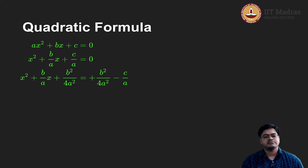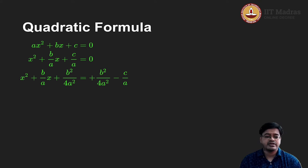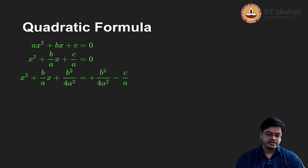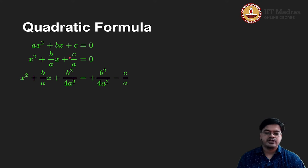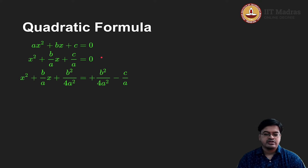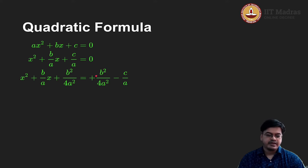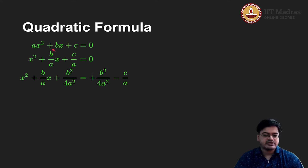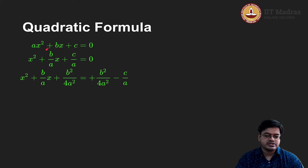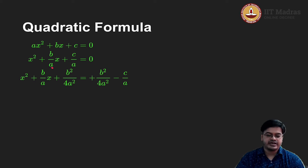Since a is not equal to 0, I can easily divide by a — that gives us the second step. Here, c by a is the constant term. As per the method of completing the square, we push c by a to the other side, so it takes a negative sign: minus c by a. Now b by a is the coefficient term. For a complete square, b by 2a must appear, so the term to add on both sides is (b by 2a) squared, which equals b squared by 4a squared. I have added b squared by 4a squared on both sides.